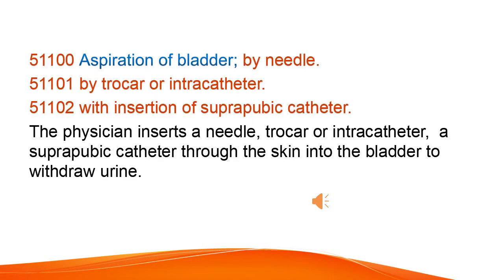Aspiration of bladder — by needle; by trocar or intracatheter; with insertion of suprapubic catheter. The physician inserts a needle, trocar, or intracatheter — a suprapubic catheter — through the skin into the bladder to withdraw urine.